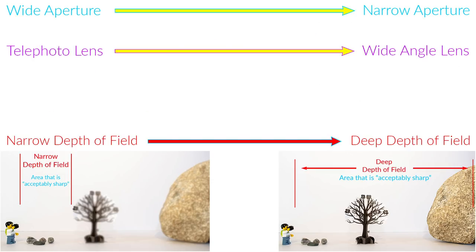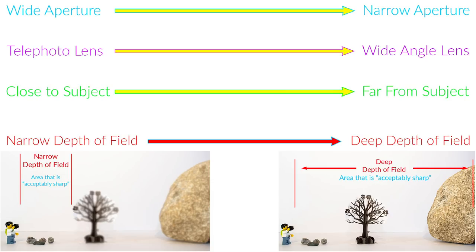The second thing that influences depth of field is the focal length of the lens — lenses with wider focal lengths have deeper depths of field. The third thing that influences depth of field is how close you are to your subject. The closer you are to your subject the shallower the depth of field, and the farther you are from your subject the deeper the depth of field.